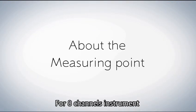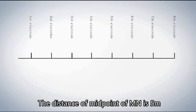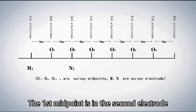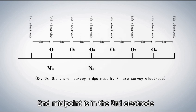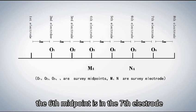For the 8-channel instrument, you can detect a total of 6 data points in one survey. The distance between the midpoints of M and N is 5 meters, and the distance between M and N is 10 meters. The first midpoint is at the second electrode, the second midpoint is at the third electrode, and so on. The sixth midpoint is at the seventh electrode.